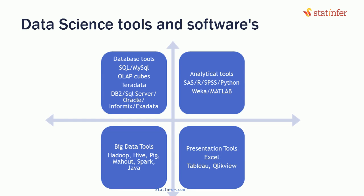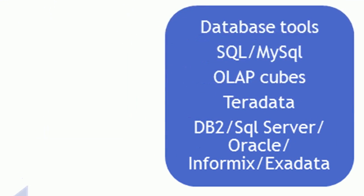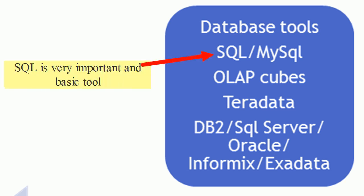There are some tools to work on each of the quadrants. It is not necessary to study each of them in detail, but since we aim to become a good data scientist, we must know at least a few from each quadrant. Database tools include SQL, OLAP Cubes, Teradata, DB2, SQL Server, Oracle, InfoMix, and Exadata. SQL is a basic and very important tool.